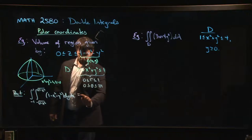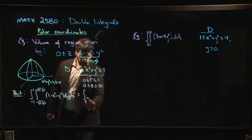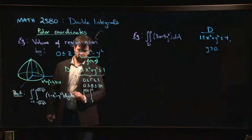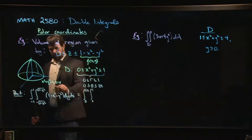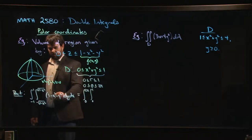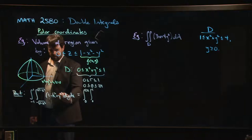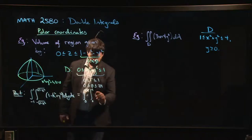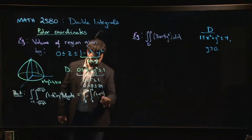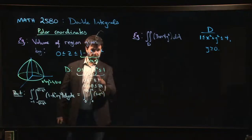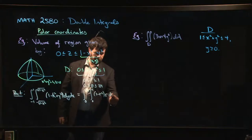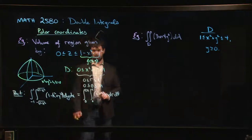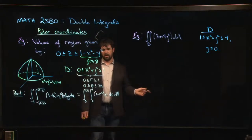Theta goes from 0 to 2π. And so I can convert this thing to polar coordinates, like so: 0, 2π, 0, 1. Now, the x squared minus, so this is x squared plus y squared. That's r squared in polar coordinates. So this becomes 1 minus r squared. Don't forget that the volume element is now r dr dθ.